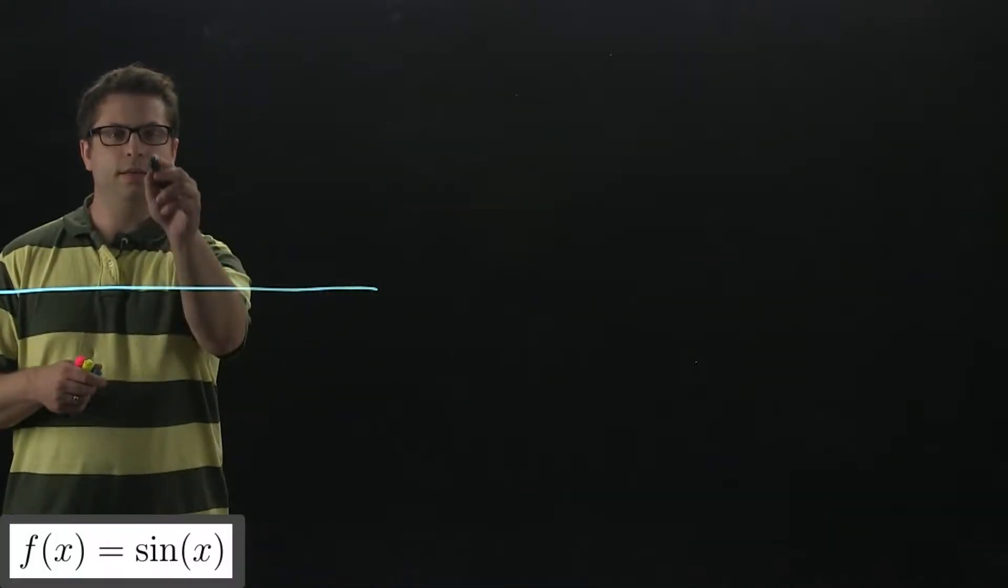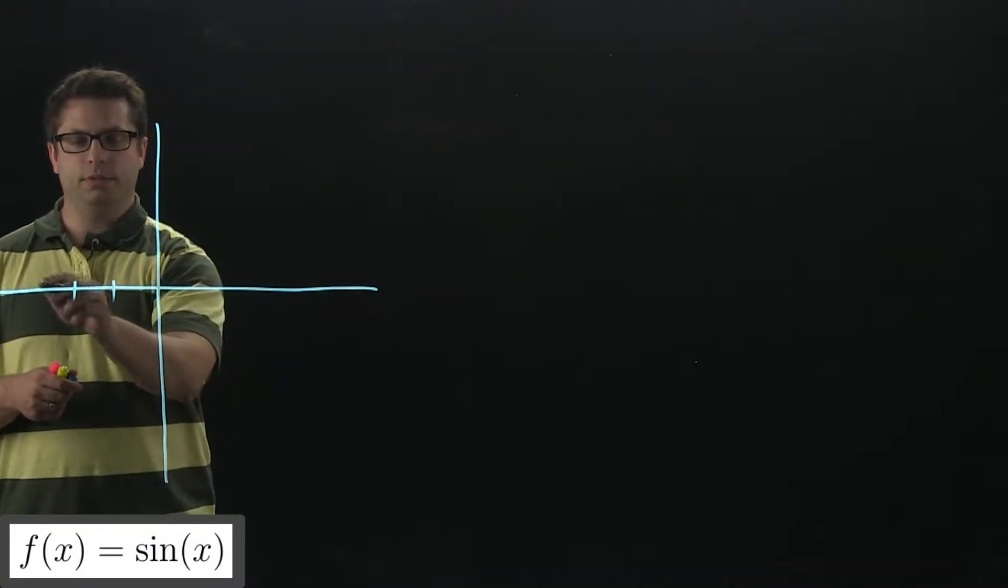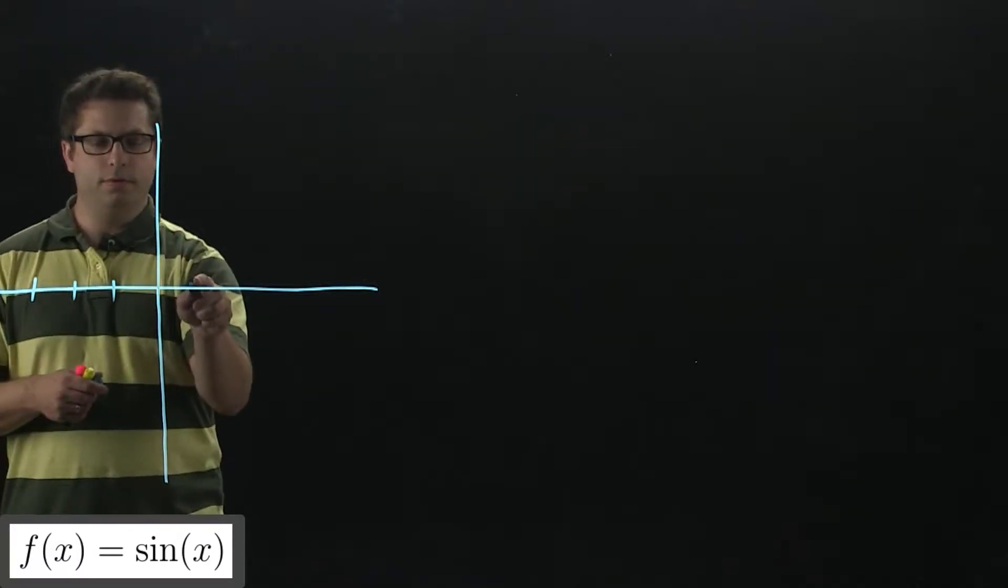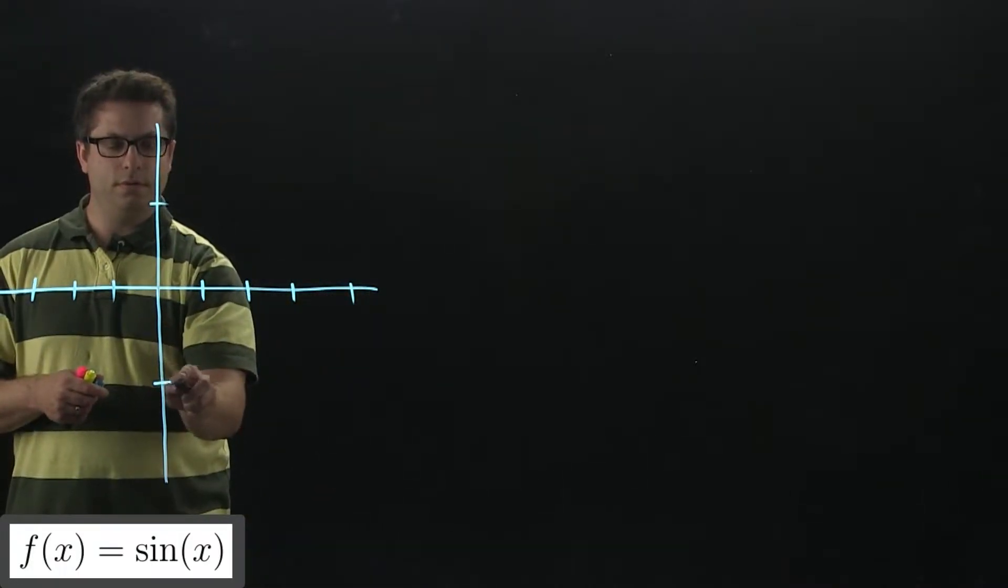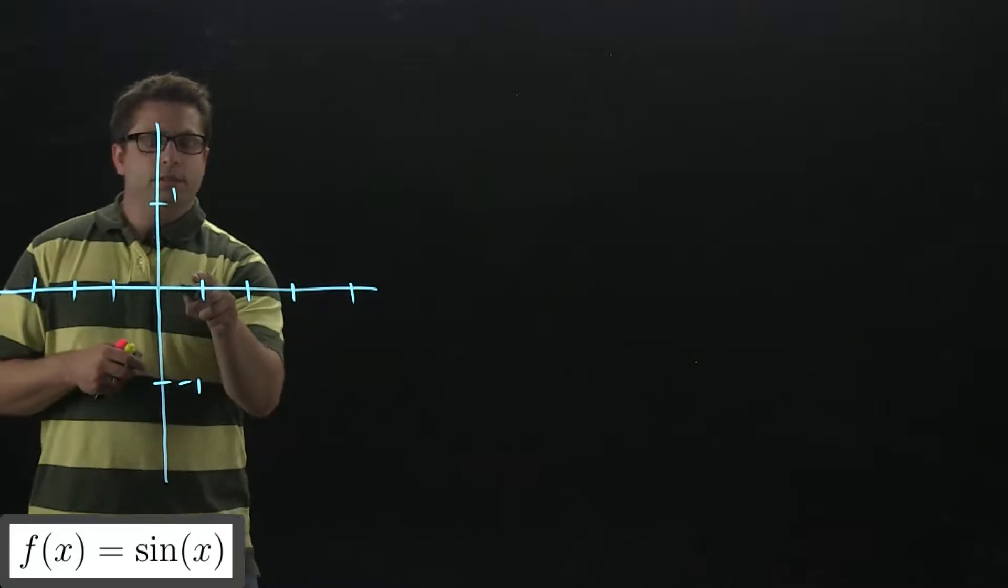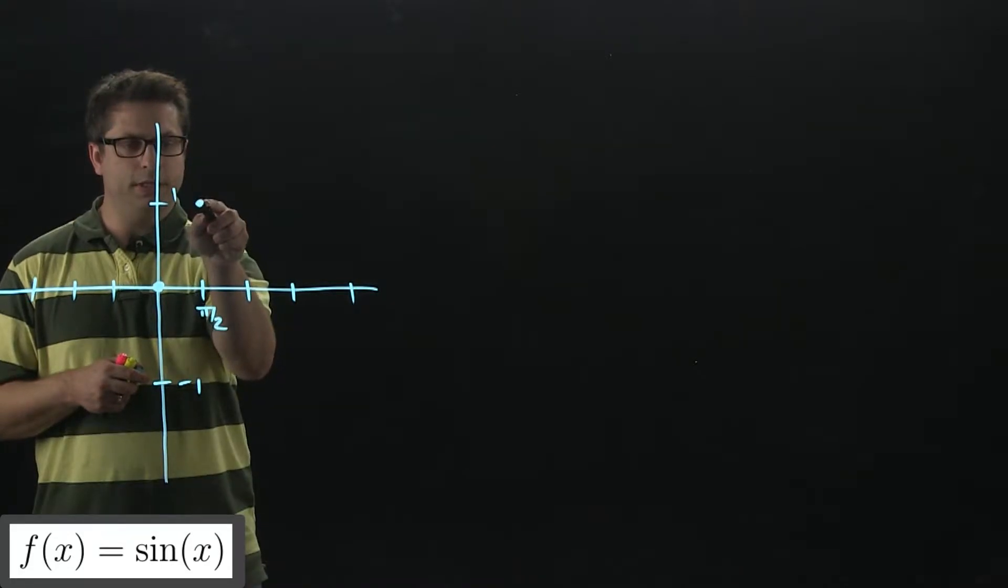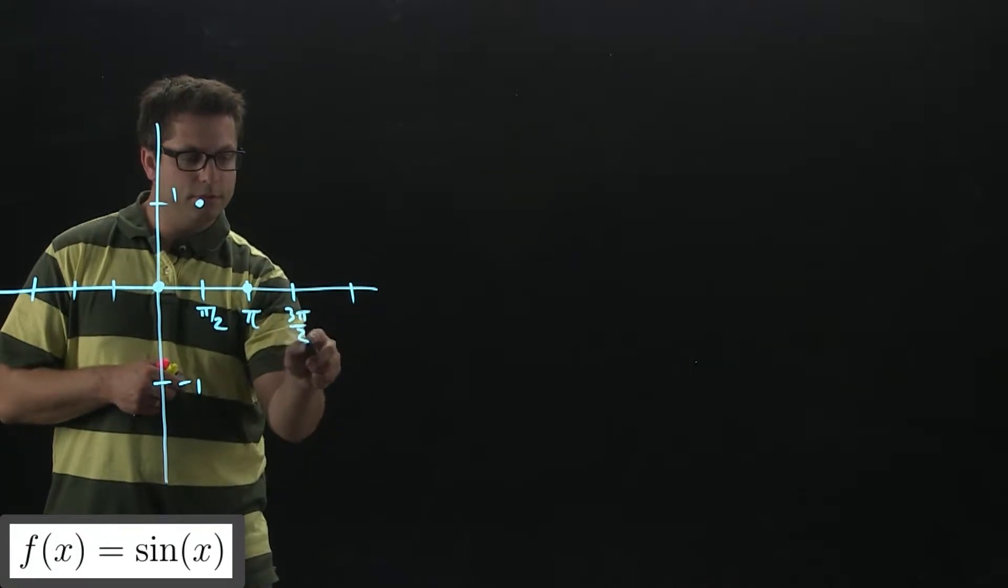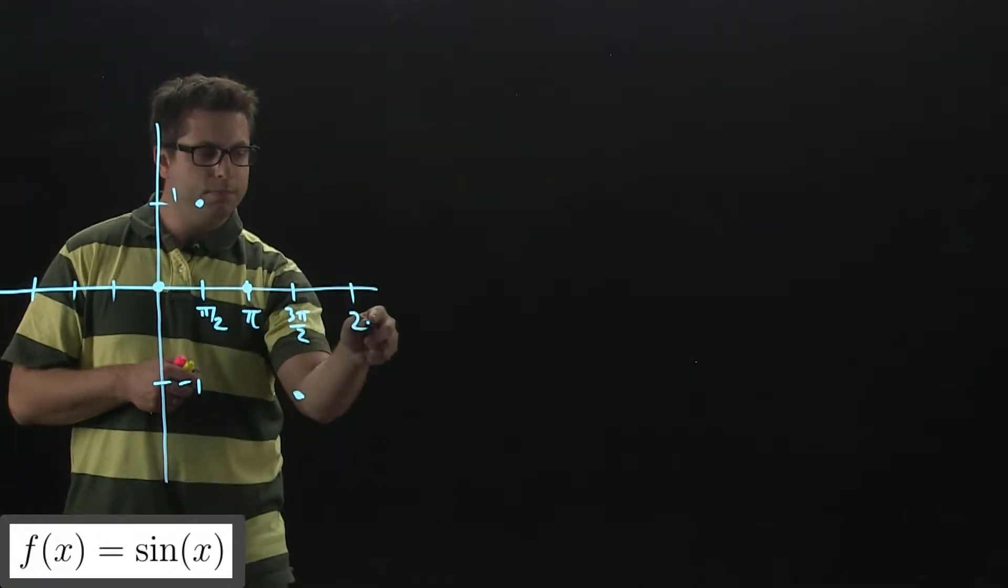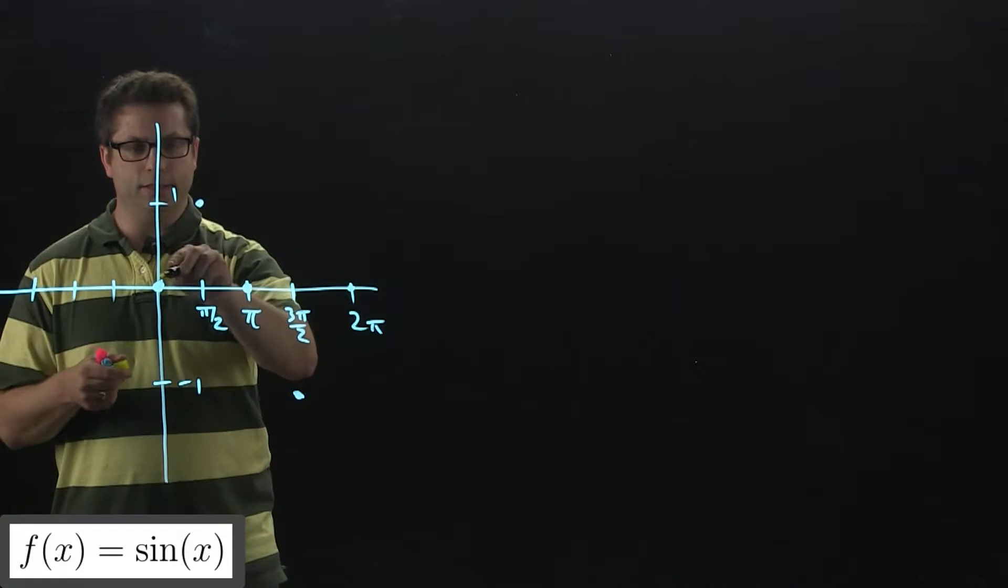Let's sketch the graph of sine x. So sine of 0 is 0. We'll make that sine of pi over 2, which is 1. Sine of pi, 0, 3 pi over 2 down here at negative 1, and then 2 pi back at 0. At least the right-hand side is going to look like this.